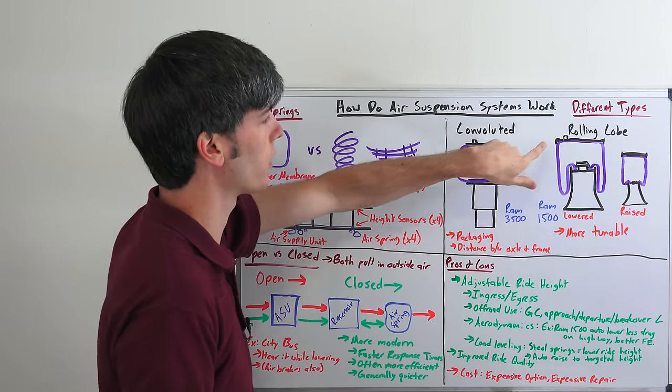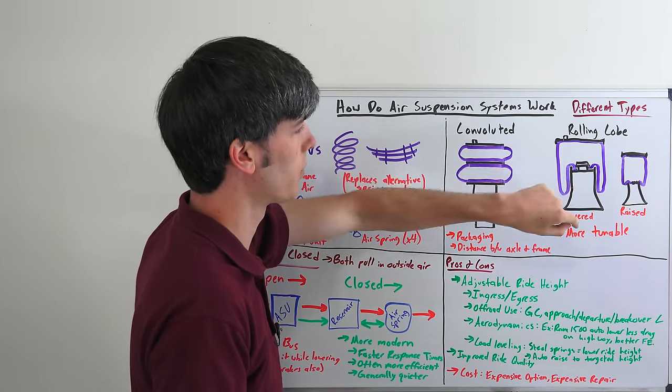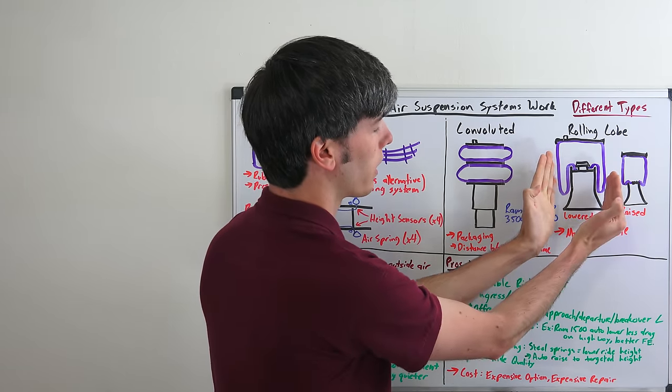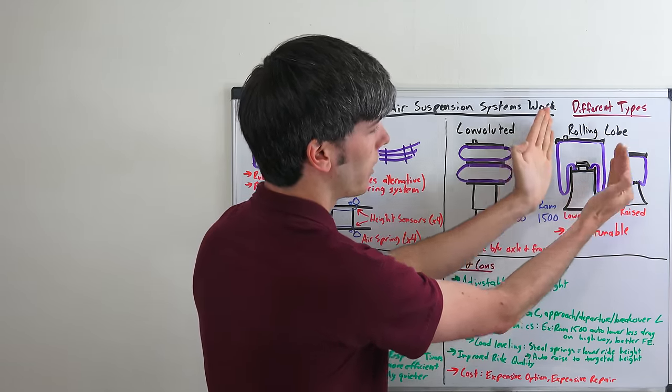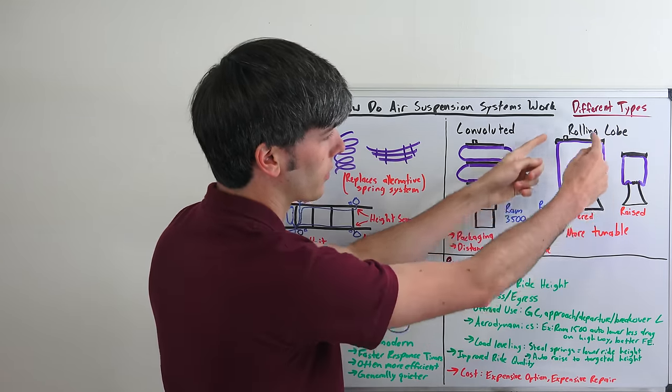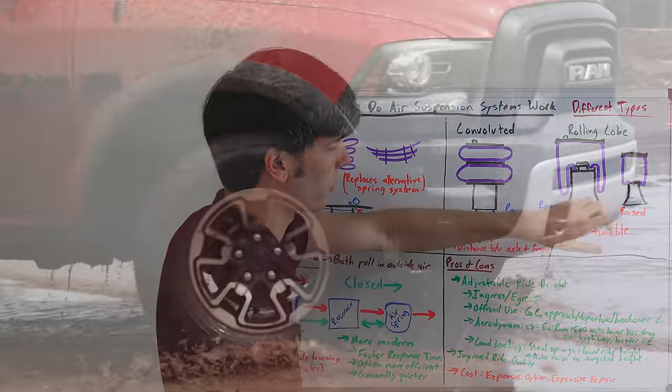As you add air into this, you can see that rubber membrane kind of rolls up this pillar right here. So once it's fully raised, it will look something like that. And when it's lowered down with less pressure, it's going to come down like this.